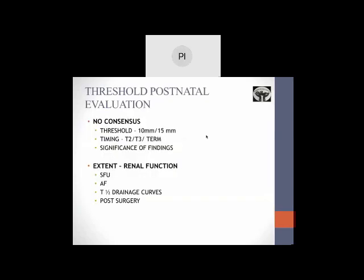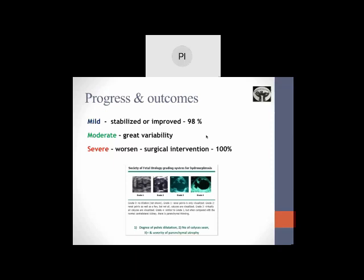The threshold for postnatal evaluation: the usual threshold is 10 to 15 mm as I mentioned. Postnatally, the extent of renal function has to be evaluated with the drainage curve seen on the EC scan or post-surgically. The progress and outcomes: the basic thing to keep in mind is most cases which are mild, grade 1 or APD less than 10, stabilize or improve in 98% of the time. There is great variability in the moderate, ranging from 25% to 50-60% improvement based on different studies. But the severe ones detected in utero definitely may worsen, and most of them or 100% need surgical intervention at some point.